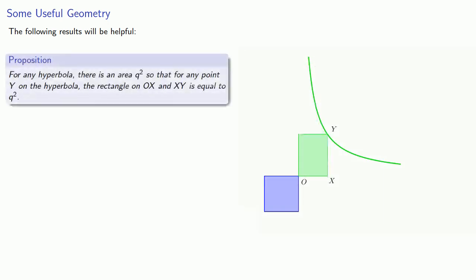And for the hyperbola, we have the following result. For any hyperbola, there is an area q², so that for any point y on the hyperbola, the rectangle on OX and XY is equal to q². And again, algebraically, if we let OX equal x and XY equal y, then q² equals xy. And we refer to this as a rectangular hyperbola.